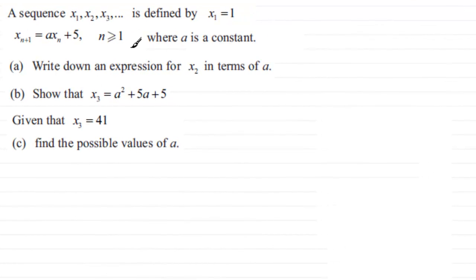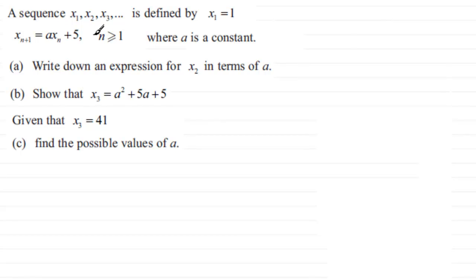In this question on sequences, we've got a sequence of terms x1, x2, x3 and so on. It's defined with the first term x1 equalling 1, and a recurrence relationship where xn+1 equals a times xn plus 5, where n is greater than or equal to 1, and a is a constant.